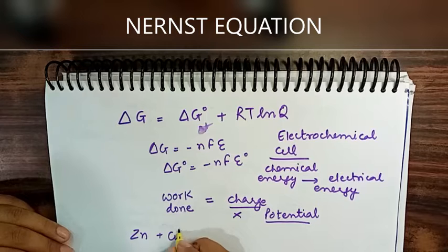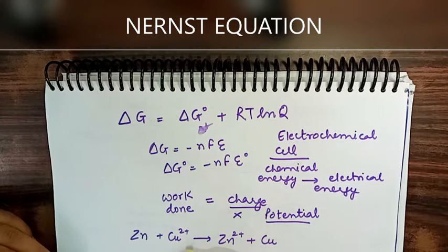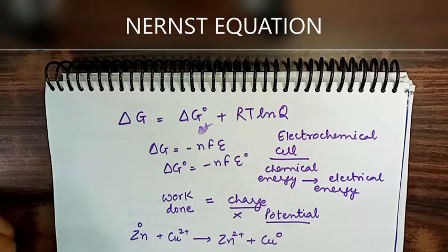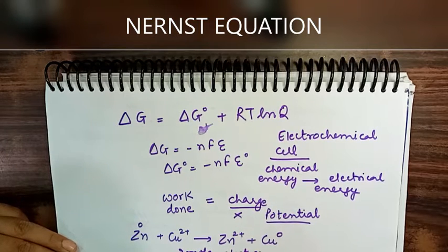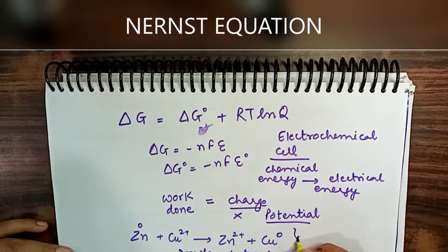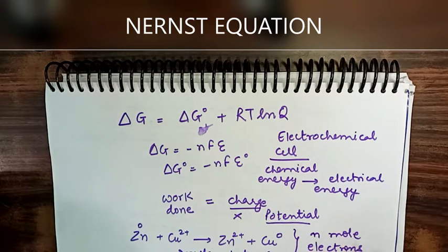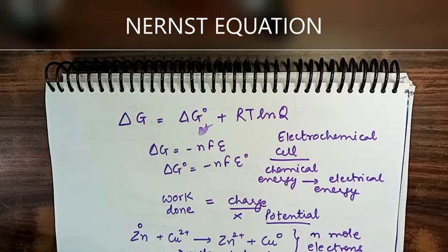Take Daniel's cell as an example. In this reaction, zinc goes from 0 to +2 and copper goes from +2 to 0, so 2 moles of electrons are transferred. In general, n moles of electrons are transferred. The charge on one mole of electrons is known as one Faraday.